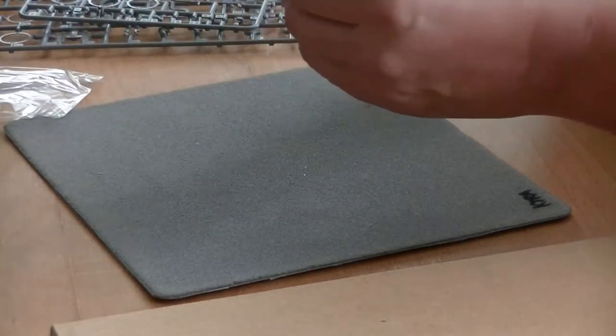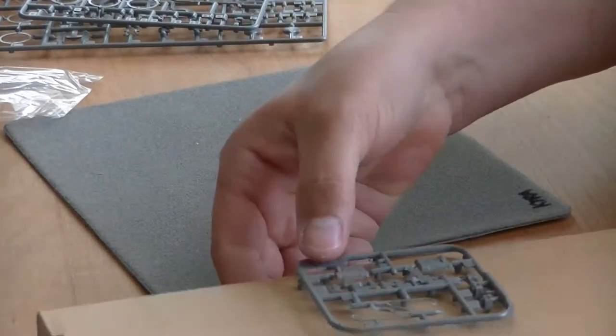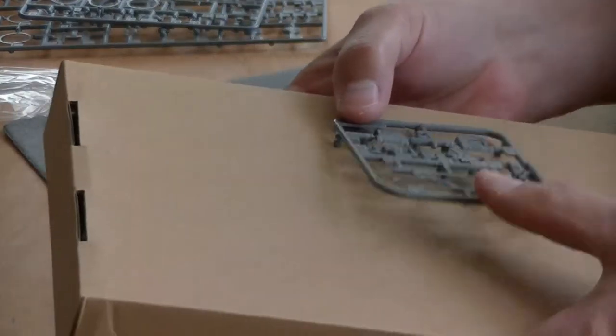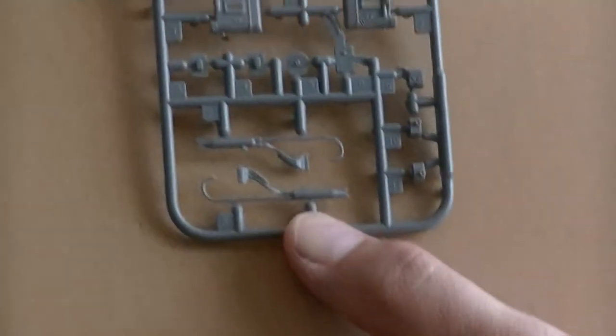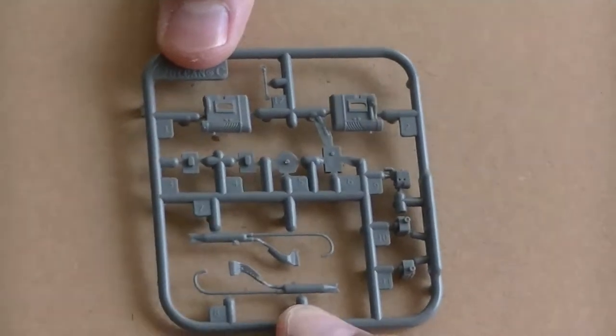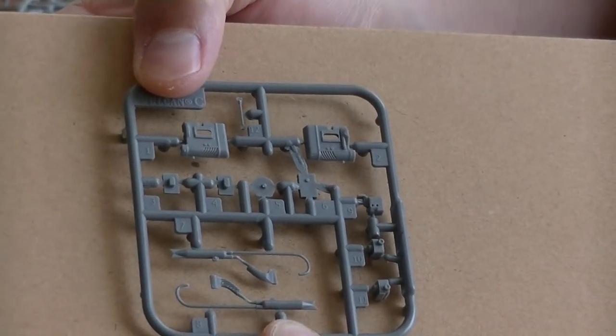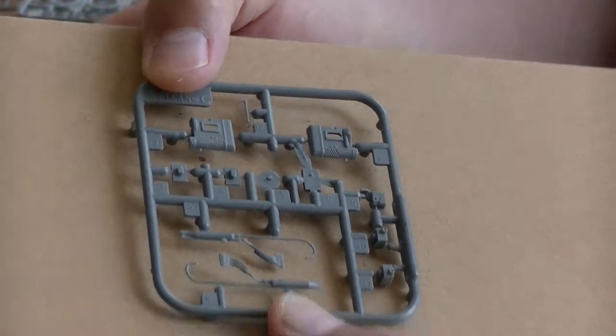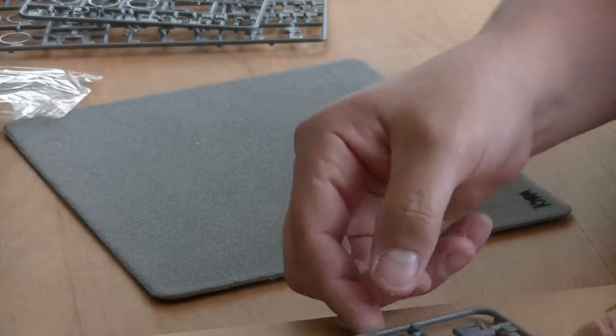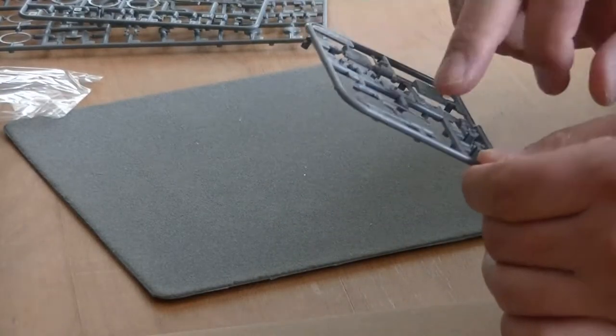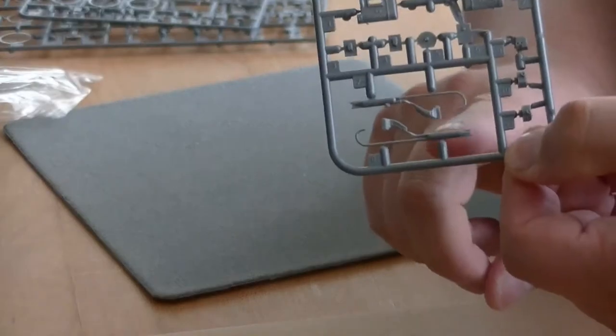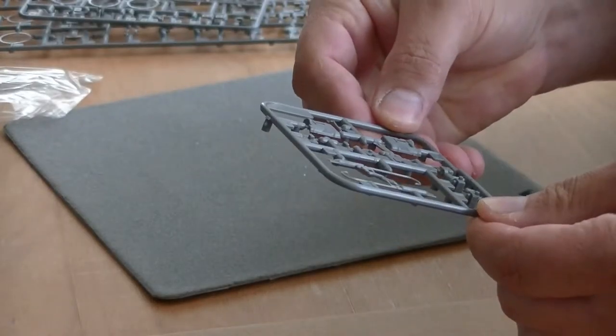And then the last sprue, which is actually the parts for the motor and the exhausts. You can see hardly a flash. Small flash here on the small exhausts. But for the rest, perfect.